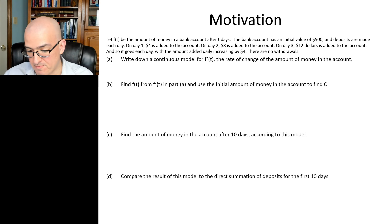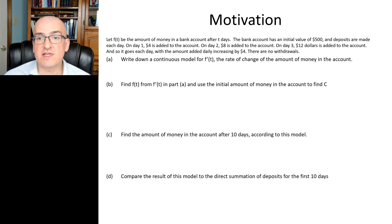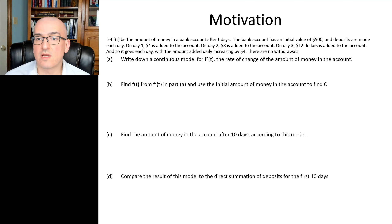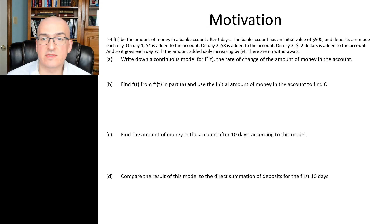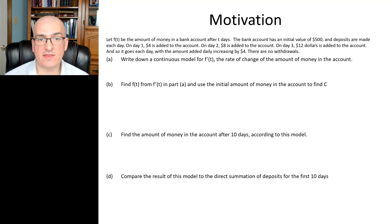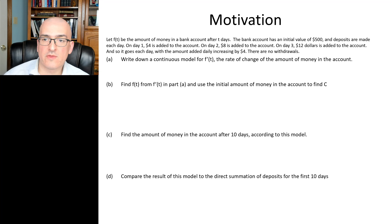We have f of t being the function that represents how much money is in a bank account t days after t days. So t is time measured in days. The bank account initially has $500 in it and money is being put in or deposited every day, but that amount changes as the days go on. In the first day $4 is added, in the second day $8 is added, on the third day $12 is added, and it goes on like that every day increasing by $4. There is no money taken out of the account, only put in.